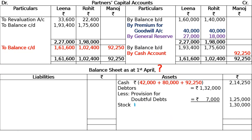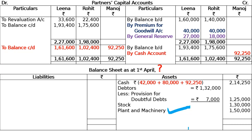Stock: was 1,46,000, overvalued by 16,000, so now shown at 1,30,000. Plant and machinery: no revaluation adjustment mentioned, so same value as before. Total assets = 6,19,250. On the liability side: sundry creditors as is, bills payable as is, workman compensation liability added as per the 40,000 claim.